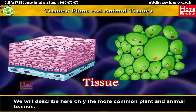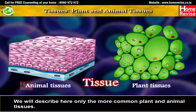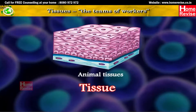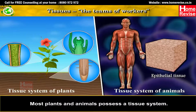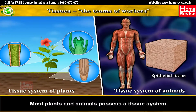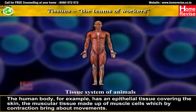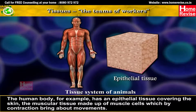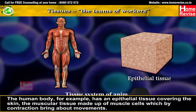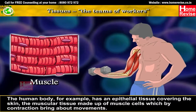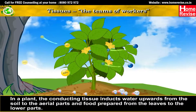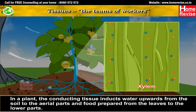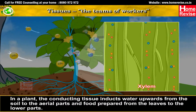A tissue is a group of similar cells performing a specific function. Most plants and animals possess a tissue system. The human body, for example, has an epithelial tissue covering the skin, and muscular tissue made up of muscle cells which by contraction bring about movements.